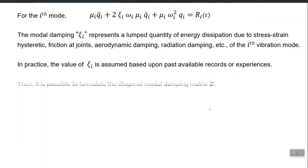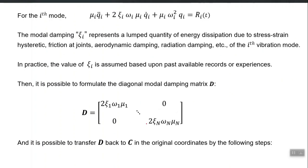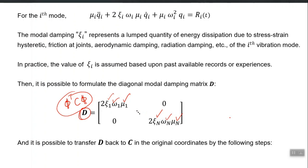The user can directly define ξᵢ for each mode, and using those values the program constructs back the C matrix to give exactly that damping term. Calling the matrix φᵀCφ as capital D, this D is directly available because all ξᵢ through ξₙ are defined by the user, μᵢ through μₙ is calculated from φᵀMφ, and ω₁ through ωₙ are obtained from eigenvalue analysis.